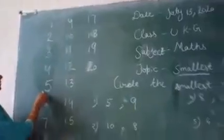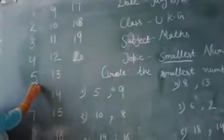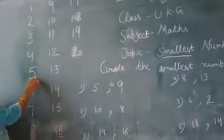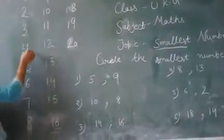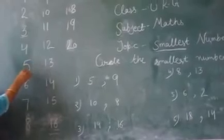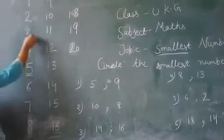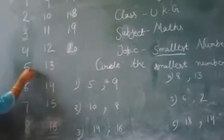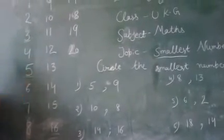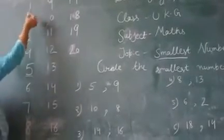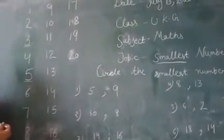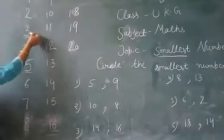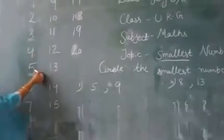Now if we have another example, we have number 5. This is 3. If we have number 3 or 5, we will know how to find which is smaller. We have number 5 to count: 1, 2, 3, 4, 5.